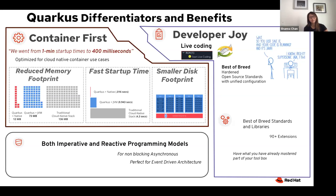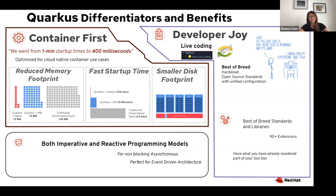As for developer joy, one of the best features I like is live coding. I will demo it and you will see how it looks — as a developer you can continuously make changes to your code without restarting the process or recompiling when you're using Quarkus. There are also lots of standard libraries and extensions available. And with the programming style we offer — whether imperative or reactive — you can have both programming styles in one application, which gives you more flexibility and productivity.